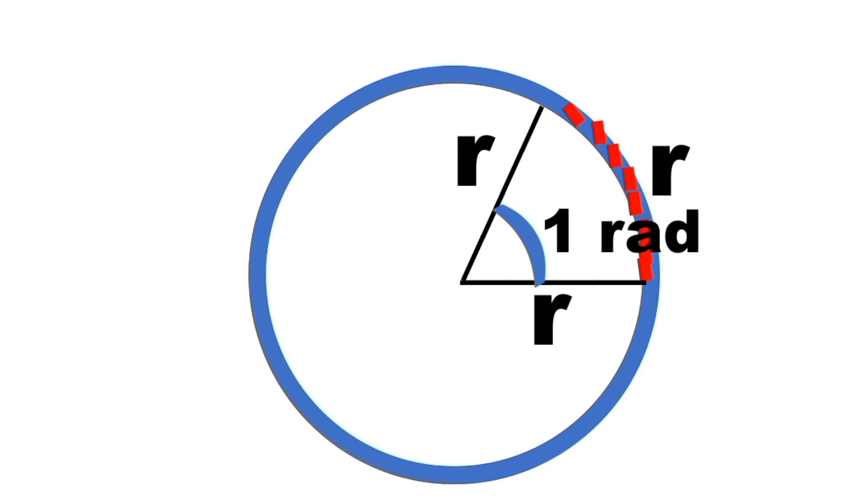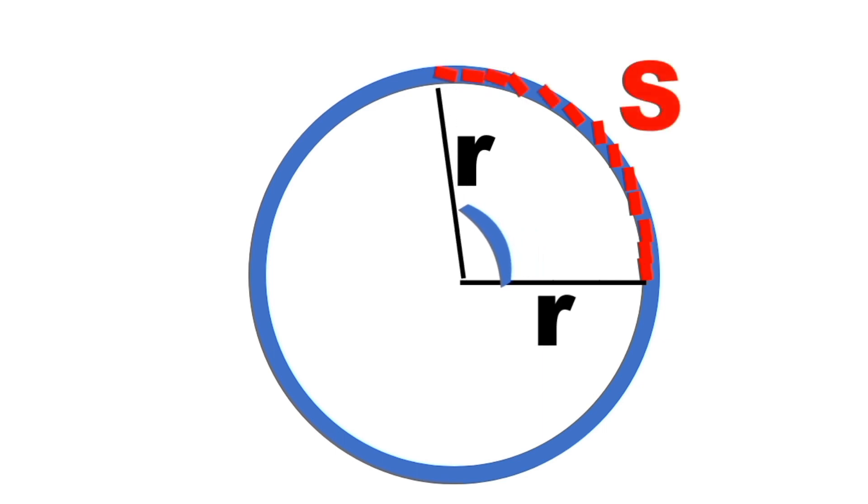If we extend or increase the arc length, this arc length is now longer than the radius, and this arc length is now represented by capital letter S. This increase in the arc length causes also the increase of the angle.